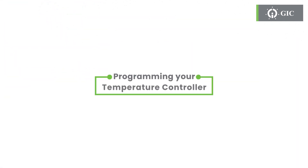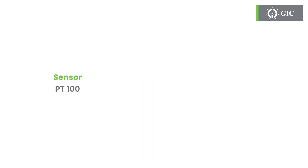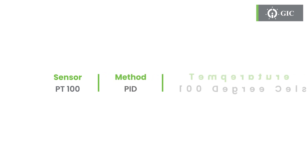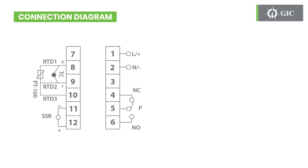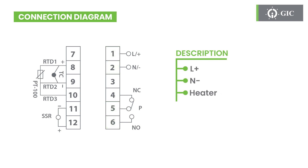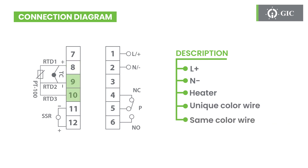Let's take an example to understand and program the temperature controller. We're using a PT100 sensor and the PID method, and setting a random temperature of 100 degrees. Let's take a look at the connection diagram. The temperature controller is connected to L plus and N minus, and two wires for the heater. There's one unique color wire and two same color wires that need to be connected.